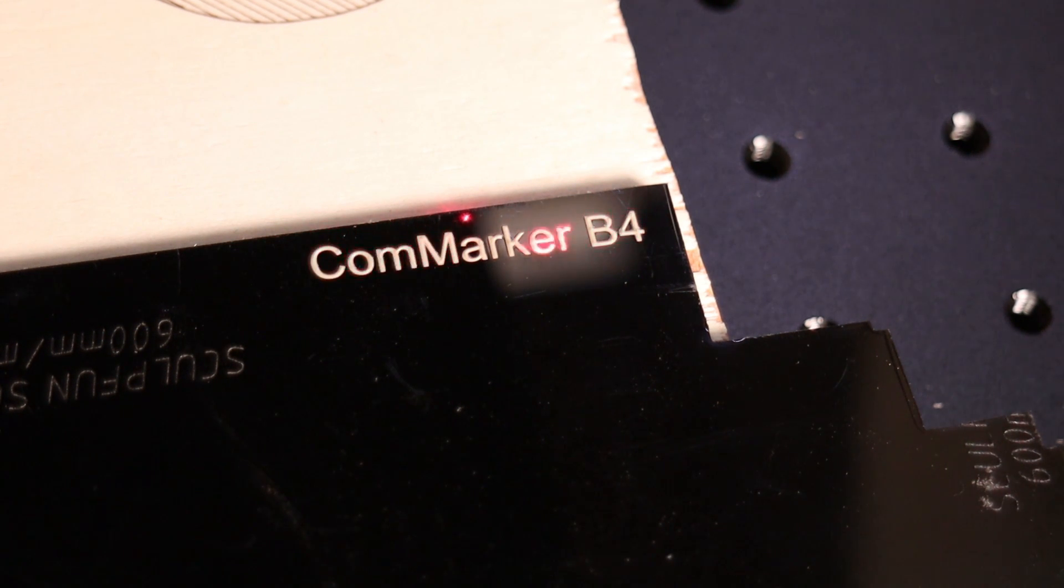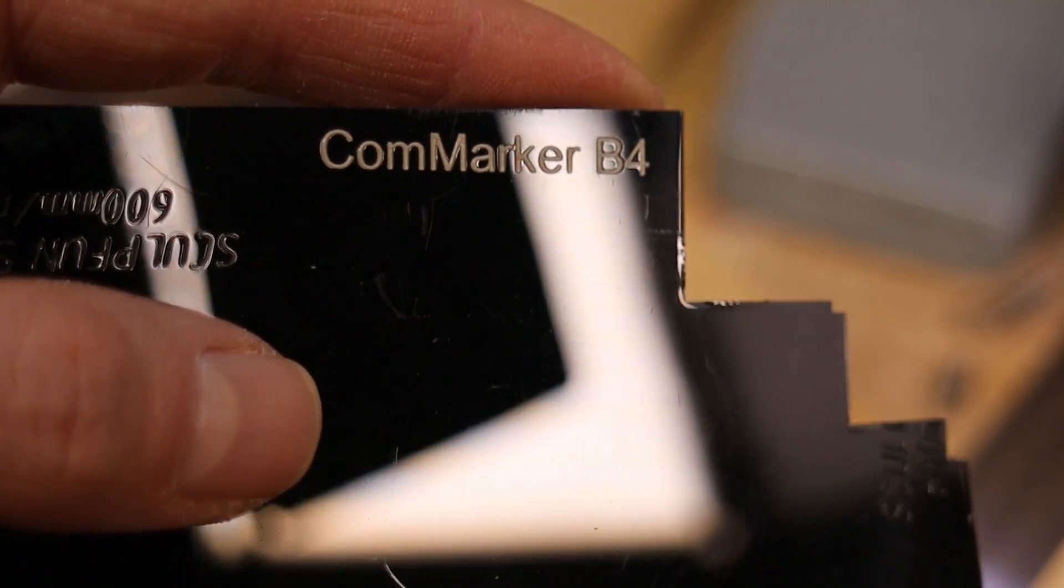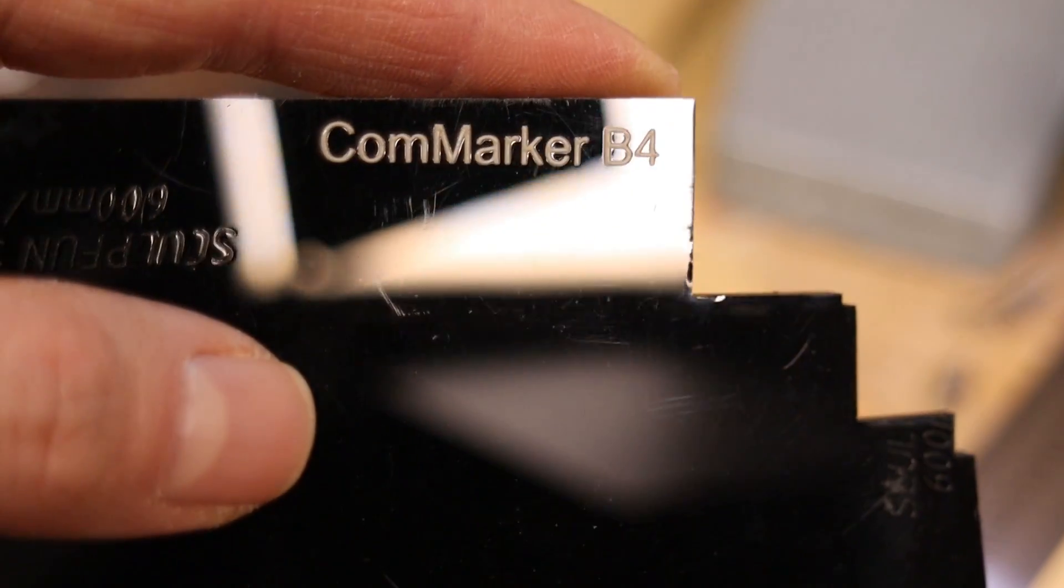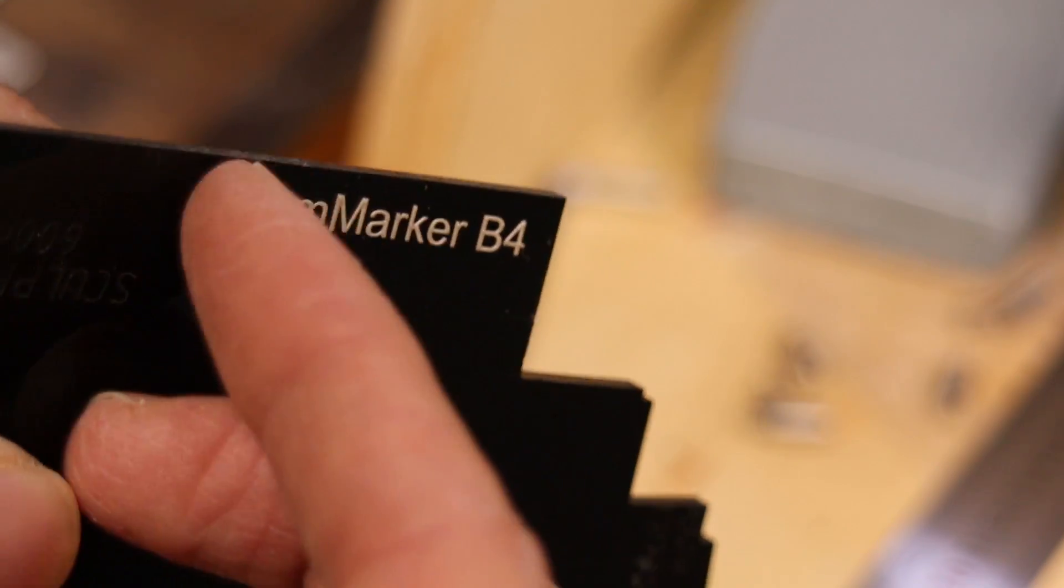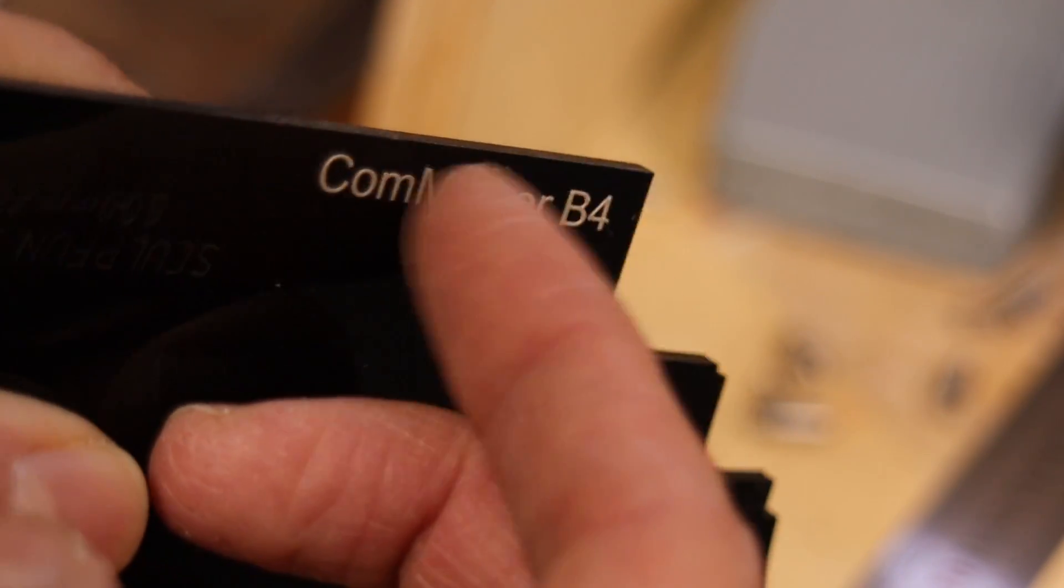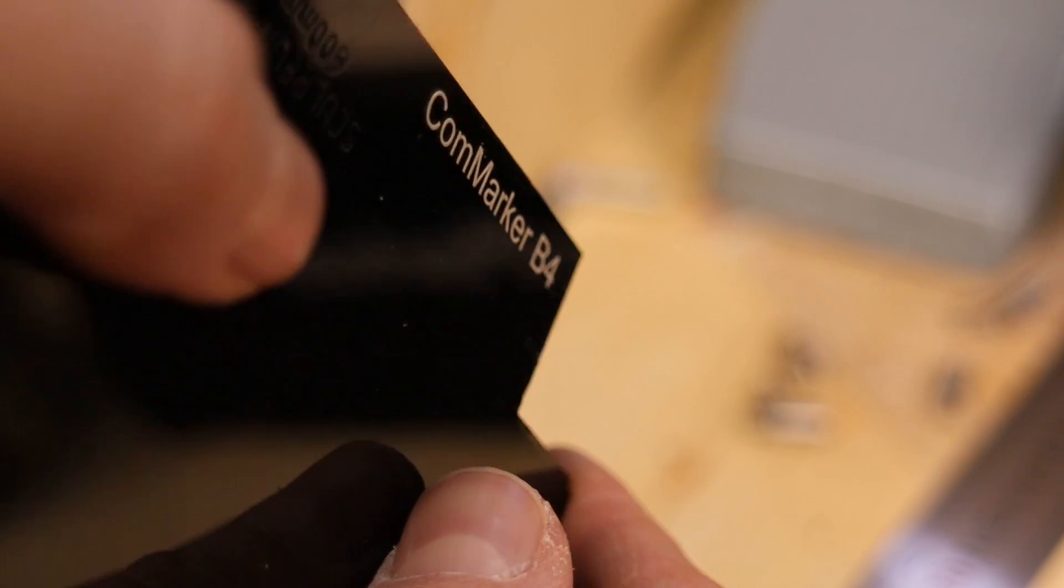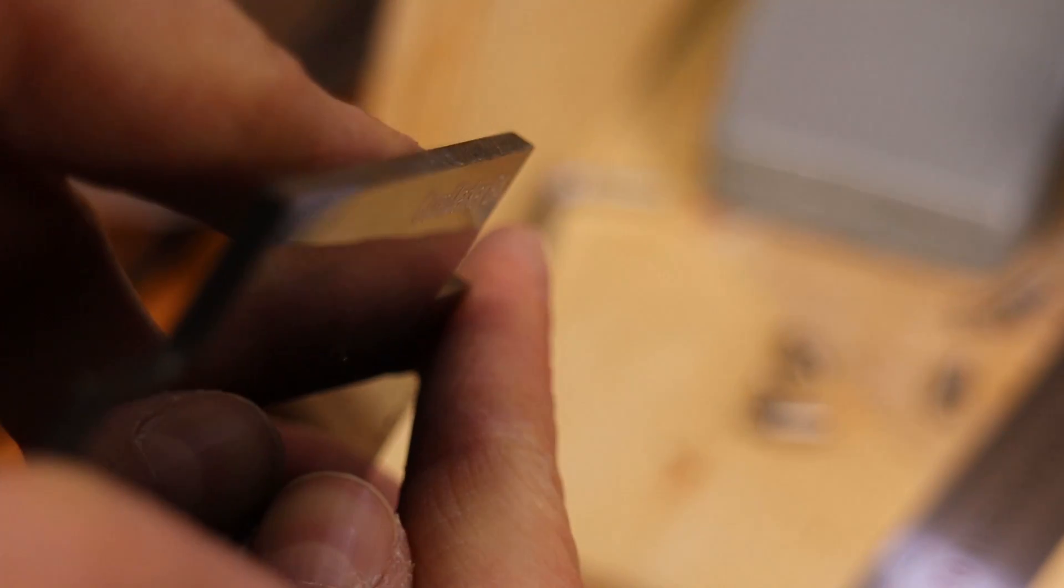The COM Marker B4 works with the same wavelength as the X-Tool infrared laser module which I have tested a while ago. This is why it is also very good at engraving black acrylic. But this effect only works on black acrylic. It melts the acrylic and the engraving pops out and is very durable. If anyone knows why it only works on black acrylic, leave a comment below.